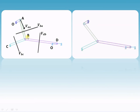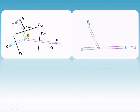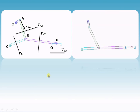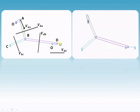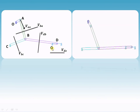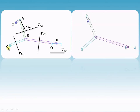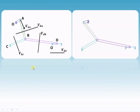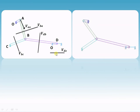Since B and D are floating points, we can say either velocity of D with respect to B or B with respect to D. But D is a slider sliding with respect to fixed point O or C of the mechanism. As it is sliding along the straight horizontal line, the velocity will be parallel to the path of sliding, and we don't know the direction.